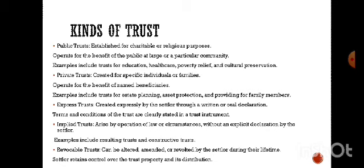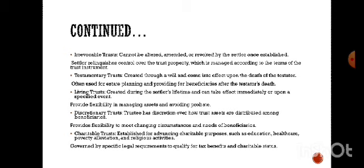A revocable trust can be altered, amended, or revoked by the settlor during their lifetime — the settlor retains control over the trust property and its distribution. An irrevocable trust cannot be altered, amended, or revoked — the settlor relinquishes control over the trust property, which is managed according to the terms of the trust instrument. In a revocable trust the settlor retains control; in an irrevocable trust the settlor relinquishes that control.